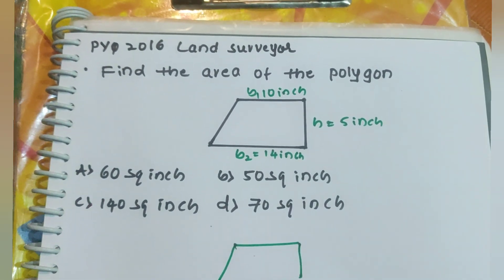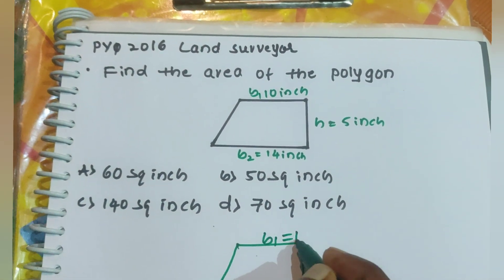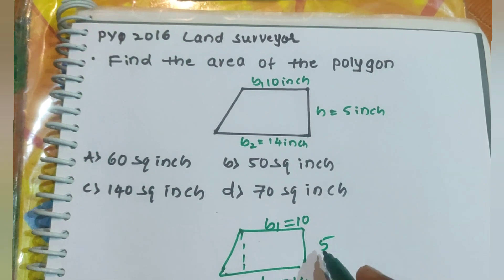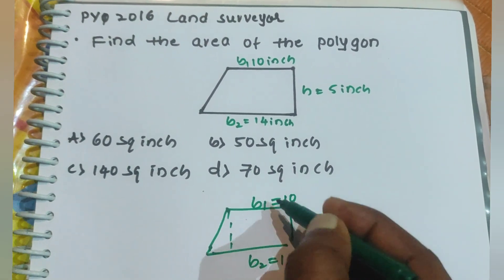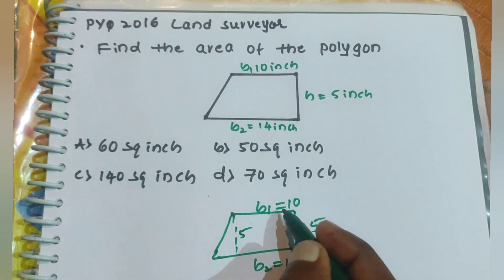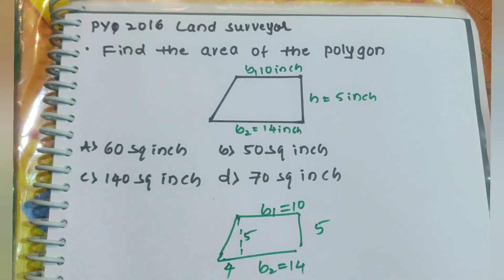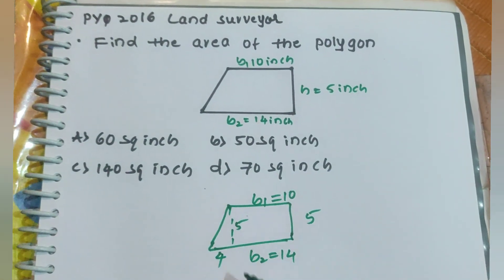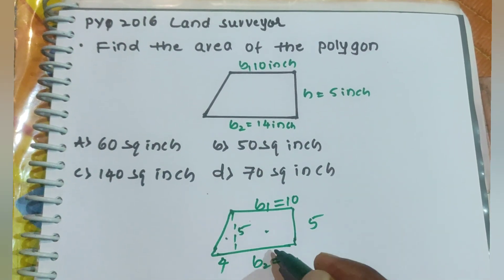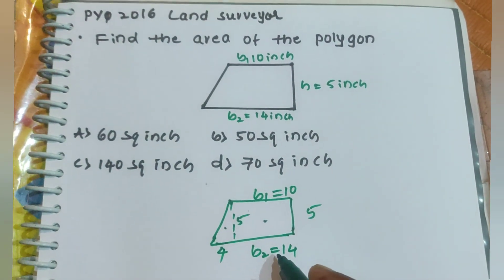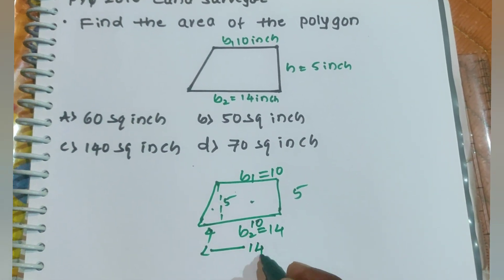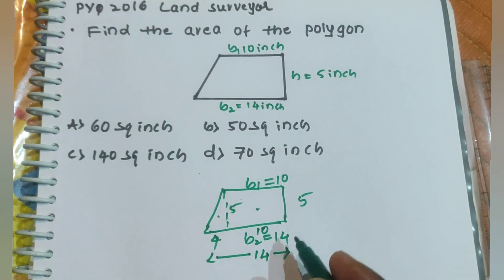Draw the given polygon. Label b2 = 14, b1 = 10, and height = 5. Draw a perpendicular line — the height equals 5 units on both sides. The difference 14 minus 10 is 4, split as 2 on each side, so each triangle has a base of 2 and the rectangle has width 10. Total length is 14 units.